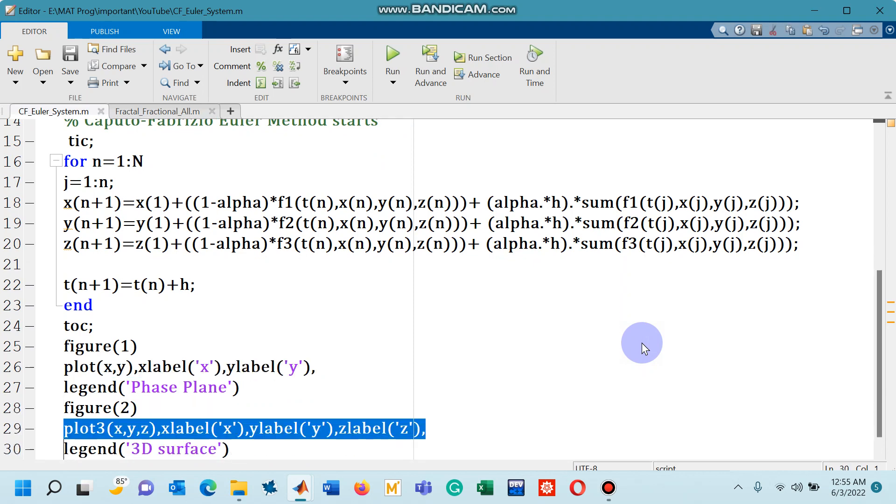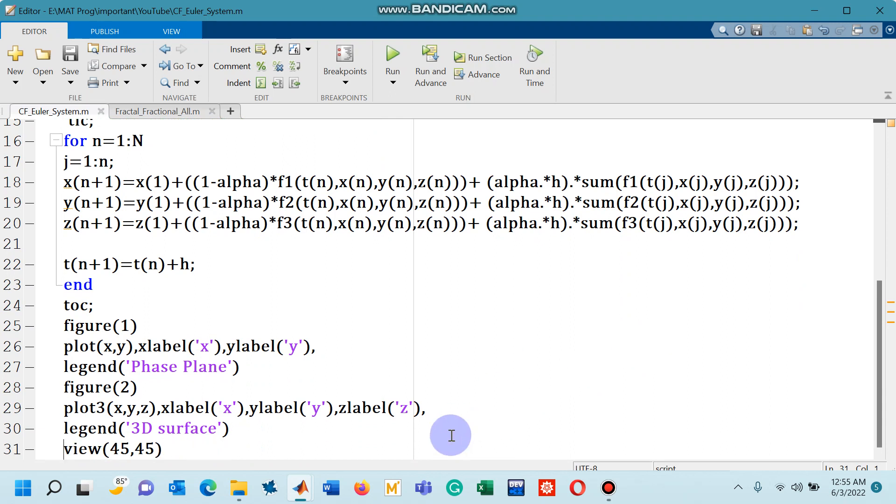In figure 2 we will have 3D surface for the given dynamical system and there are some labels, legend and then I have given the command of view to see the 3D surface from some different angles. So view command actually sets the azimuth and elevation angles for the current axes.